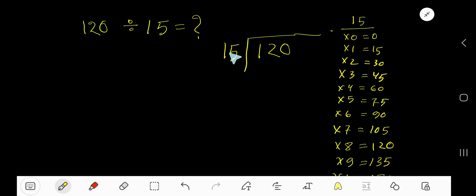120 divided by 15 here. 15 is a divisor so we need multiplication table of 15.